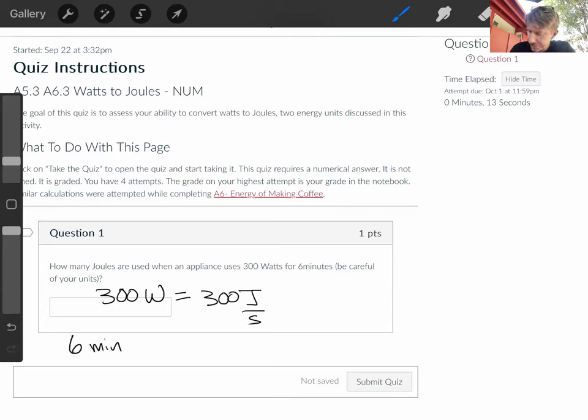Six minutes. We know that one minute is 60 seconds. And we know that we are using 300 joules per second, and we can go ahead and write 300 joules per one second there, so we have a number there.